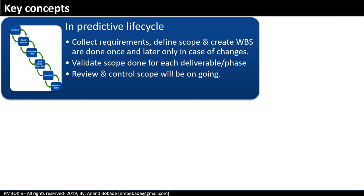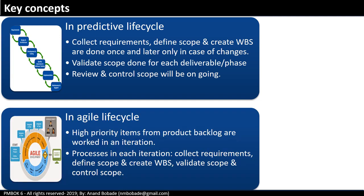In agile projects, initially a product vision is developed, followed by a product backlog — the list of high-level product requirements based on the product vision. High-priority items from the product backlog are added to an iteration, sometimes called a sprint. In each iteration, the processes include: collect requirements, define scope, create WBS, validate scope, and control scope. As per PMI, scope management processes are followed in both approaches, however how they are applied is different.